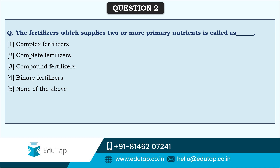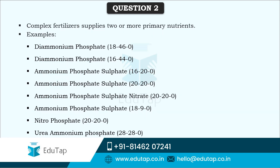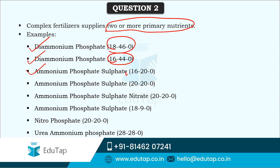The next question asks: fertilizers which supply two or more primary nutrients are called what? These are called complex fertilizers. Examples include diammonium phosphate, which contains nitrogen and phosphorus; ammonium phosphate sulfate, which has nitrogen, phosphorus, and sulfur; ammonium phosphate sulfate nitrate, which has nitrogen, phosphorus, and sulfur; nitrophosphate with nitrogen and phosphorus; and urea ammonium phosphate with nitrogen and phosphorus.